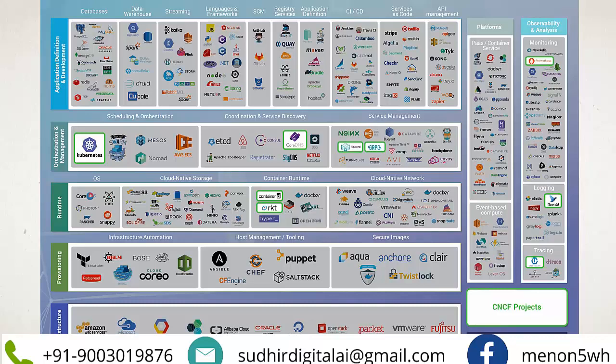The runtime layer includes OS, cloud native storage, container runtime, and cloud native networks. For OS, tools like Snappy and Photon are used. For cloud native storage, options include Amazon S3, Rook, SolidFire, and Hadoop. For container runtime, Docker and Hyper are examples. For cloud native networking, VMware and Docker solutions are available. For orchestration and management, there are scheduling/orchestration tools like Kubernetes, Swarm, Mesos, Nomad, and AWS ECS.